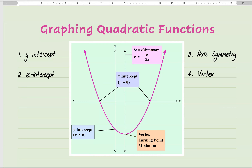Let's look at how we can graph quadratic functions or parabolas. There are four key things you need to make a good sketch of a quadratic function. We've got our y-intercept — to find it, we make x equal to zero. To find the x-intercept, we make y equal to zero, and when we do that, we are solving a quadratic function.